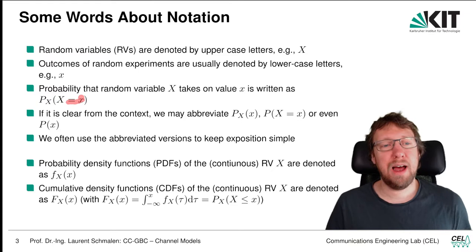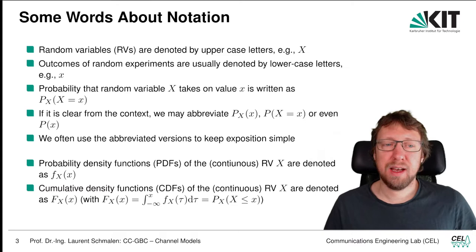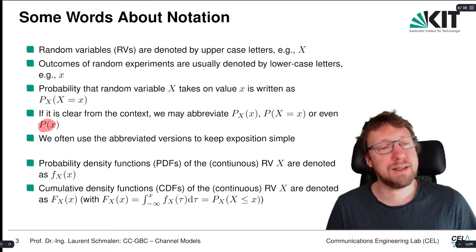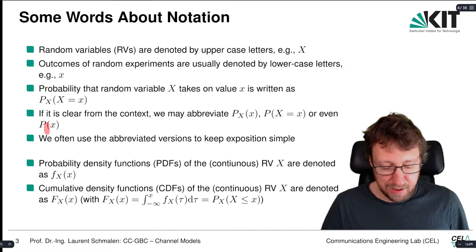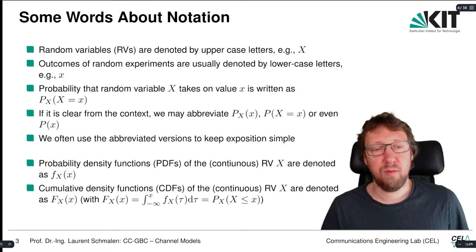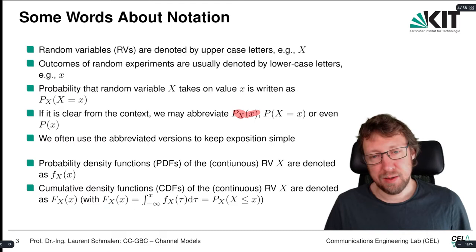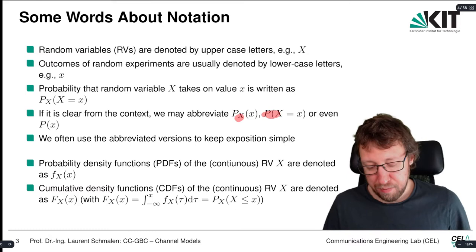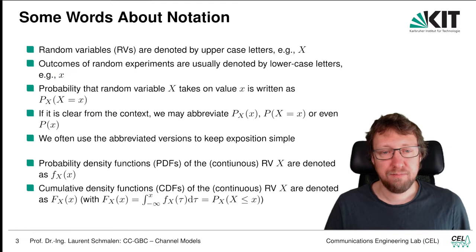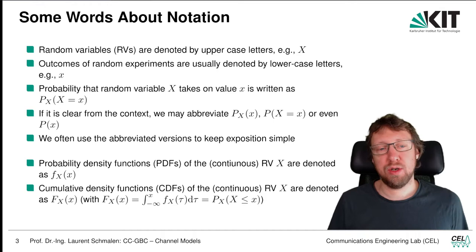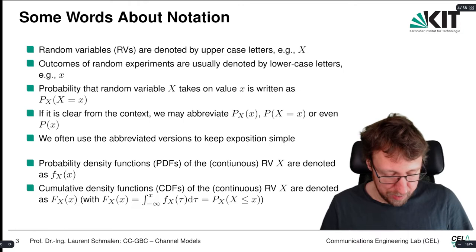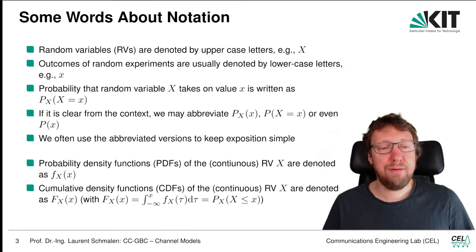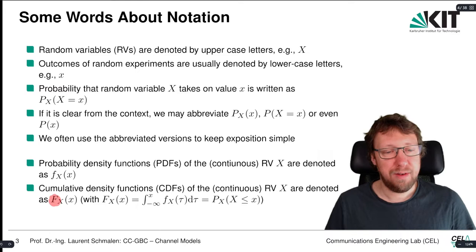The full notation — writing the probability that random variable X takes on value lowercase x as P_X(x) — is redundant and cluttered. So if it's clear from context, we abbreviate: we write just P(x), where the subscript denotes the random variable. Either we write P_X(x), or P(X = x). We'll use the abbreviated version to keep the exposition simple. Probability density functions are denoted P_X(x), and cumulative density functions (CDF) are denoted with uppercase P(x), since the CDF is the integral of the PDF.